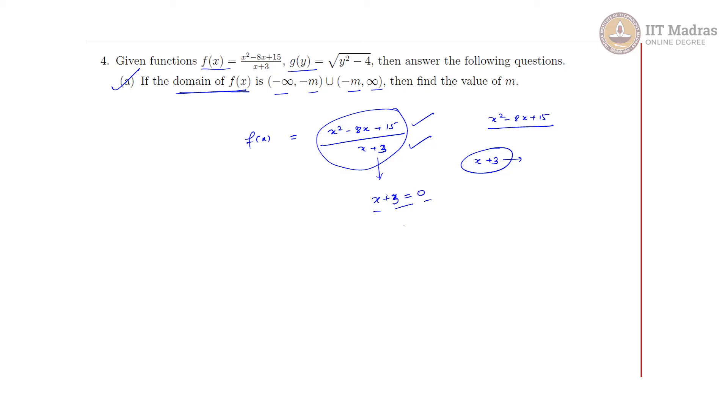When this is 0, x = -3. So the function is defined on real numbers except x = -3. What does it mean? If I take a real line, this is 0 and this is -3. The function is totally defined till here and after here. It is not defined at only this point.